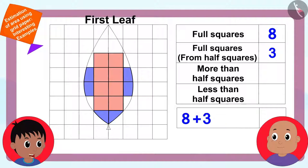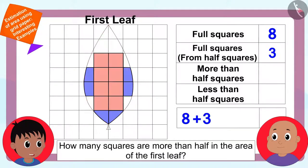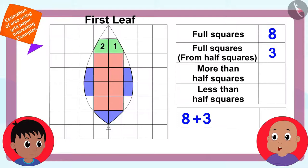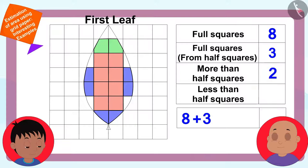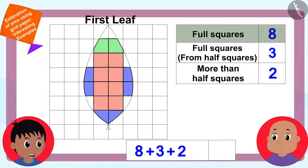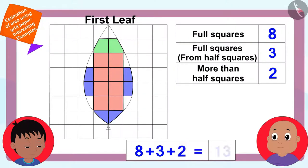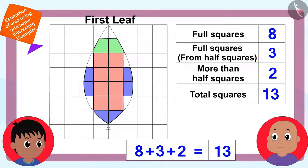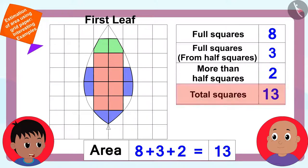Finally, Raju asked how many squares were more than half in the first leaf's area. Bablu excitedly said two. Raju confirmed those count as full squares, adding two more to the total. He also noted they would not count any squares that are less than half. The area of the first leaf totals eight plus three plus two, which equals thirteen squares.